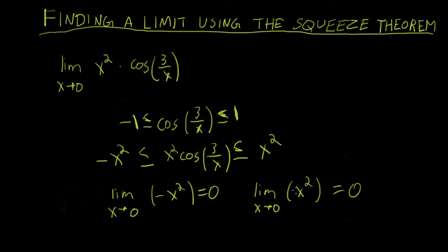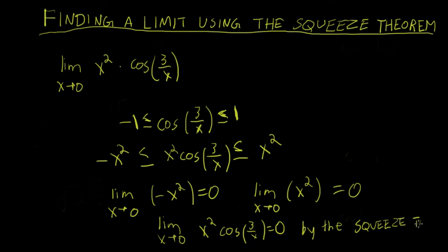So these two limits are 0. So by the squeeze theorem, the limit as x approaches 0 of the function that's between them around x equals 0 is also going to have to be 0. So the limit as x tends to 0 of x squared cosine of 3 over x equals 0 by the squeeze theorem. So hopefully that gives you a better idea of how to go about using the squeeze theorem.